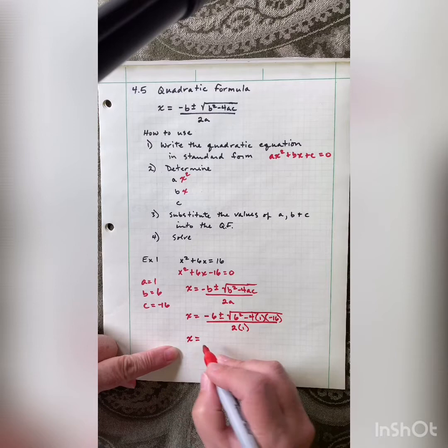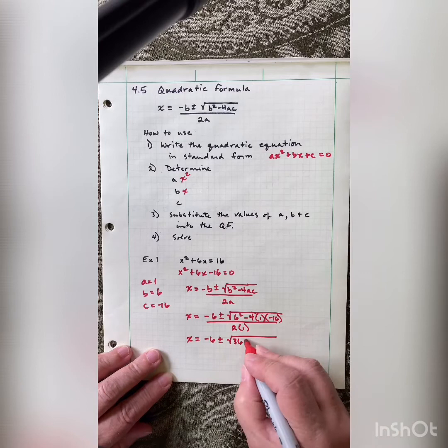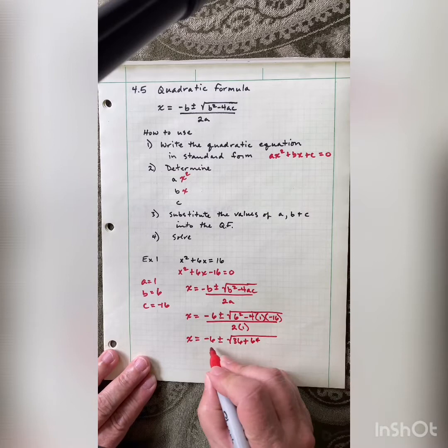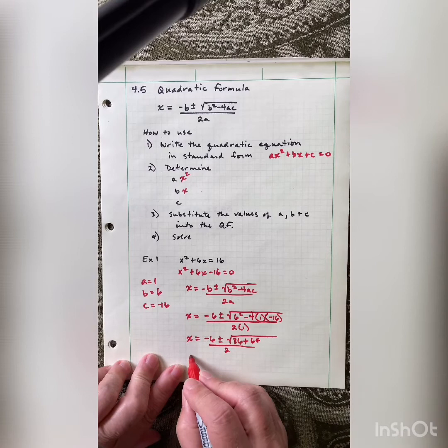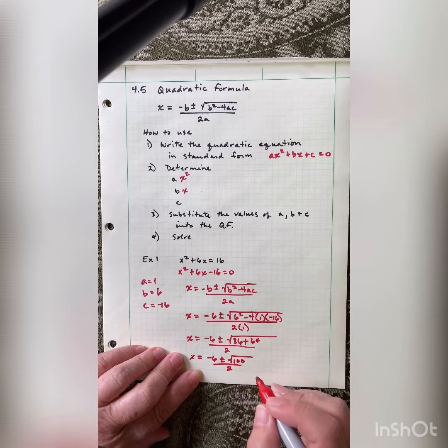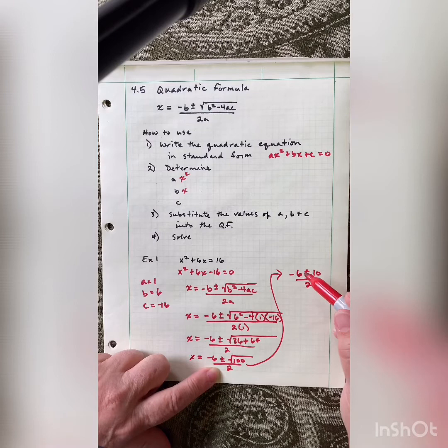Now let's start cleaning it up. This will be negative 6 plus or minus square root of 36, and a negative times a negative gives me a positive, so we have 64, giving us 36 plus 64, over 2 times 1 which is 2. Keep cleaning it up: x equals negative 6 plus or minus square root of 100 over 2. Square root of 100 is 10, so we get negative 6 plus or minus 10, over 2.